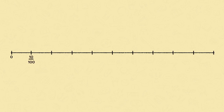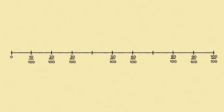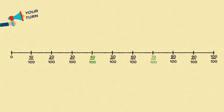Let's look at hundredths on a number line between zero and one. We'll have ten hundredths, twenty hundredths, thirty hundredths, and so on. But there are some gaps on this number line, so it's your turn to fill these gaps. Pause the video and have a go. Well done if you got forty hundredths and seventy hundredths.